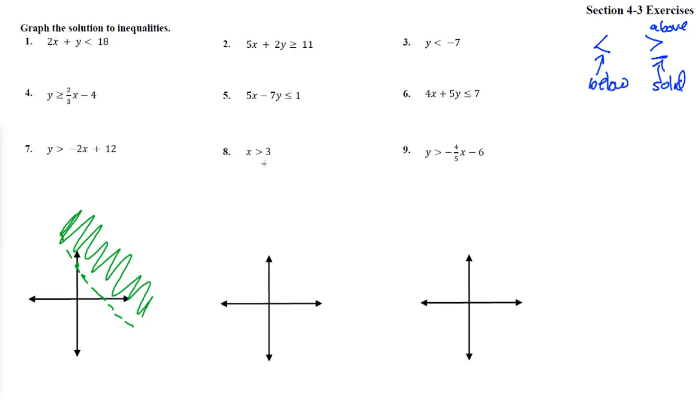Alright, number 8. X is bigger than 3. Now we don't have this in y equals mx plus b form. We just have to graph the line x equals 3. So we go over to where x is 3. And it's a vertical line straight up here like this, where x is always 3.